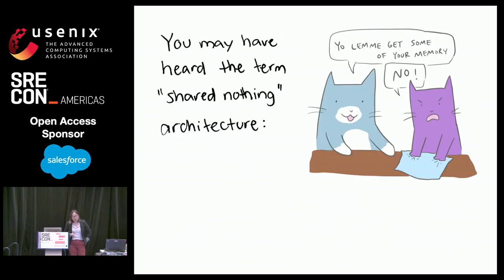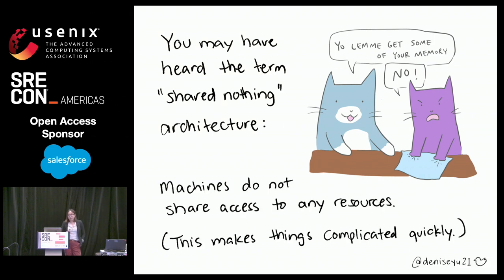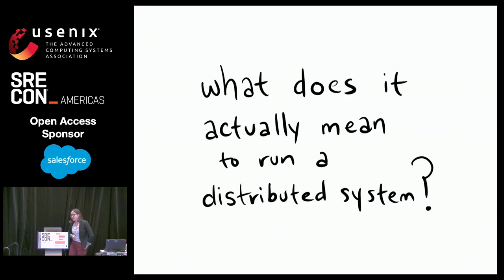I want to talk about modern distributed systems for a little while. You may have heard the term shared-nothing architecture. This is the most popular form of network computing, and this is how all the public clouds work. It means that machines don't share any hardware, any resources, or any visibility into how those resources are being used, which leads to a lot of fun complications.